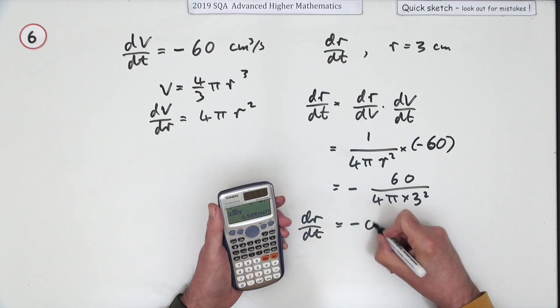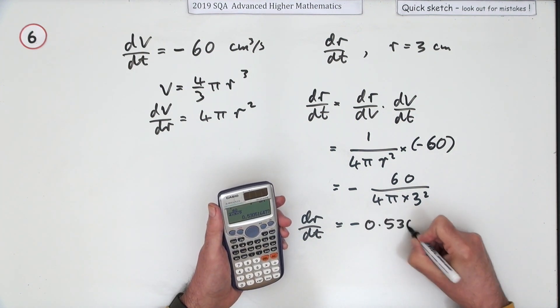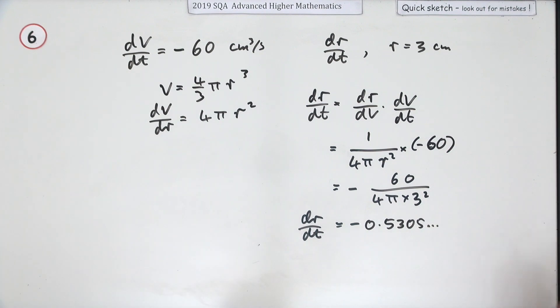And that gives you 0.5305 and so on. I'll just say rate of change of r equals negative 0.531 centimeters per second.